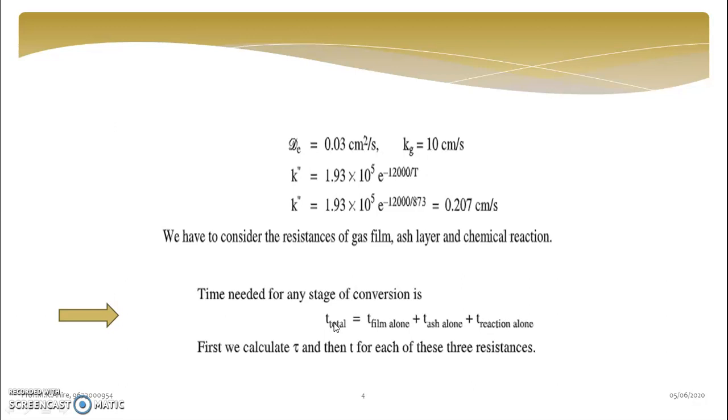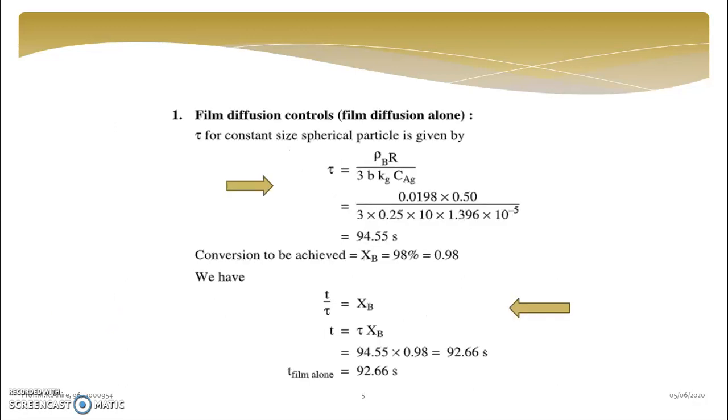Because we have formulas of tau. So there is a relation between T, tau and XB. As XB is 98%, means 0.98, as it is a fractional value.